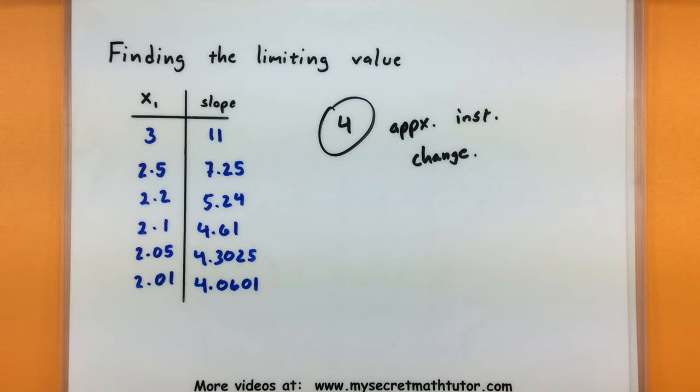Now, I got another video on how to do this on the calculator, so if you understand this process, maybe go check that out and see how you can make this go a little bit faster. But that's how you find the approximate instantaneous change of a function at a single point. If you'd like to see some more videos, please visit MySecretMathTutor.com.